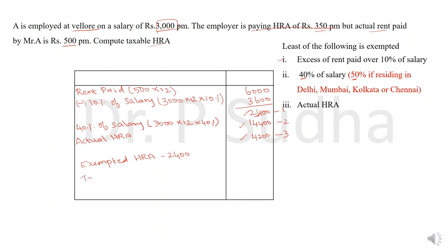Now we calculate the taxable HRA. Actual HRA received is Rs. 350 per month; 350 × 12 = Rs. 4,200. Minus exempted HRA of Rs. 2,400. Therefore, taxable HRA is Rs. 1,800. I hope you understood how to calculate house rent allowance. Thank you for watching.